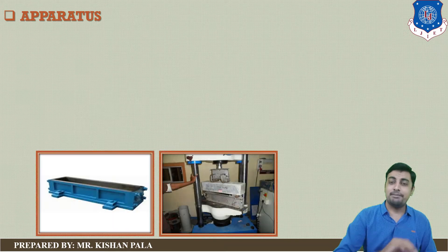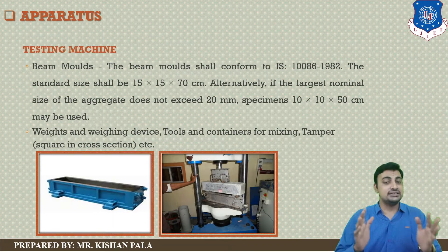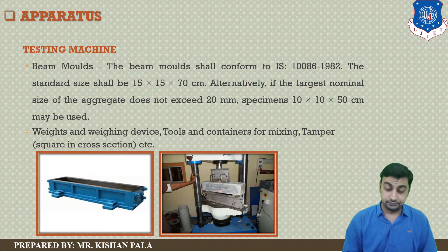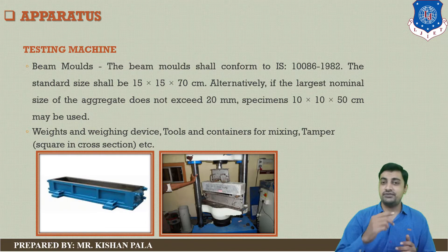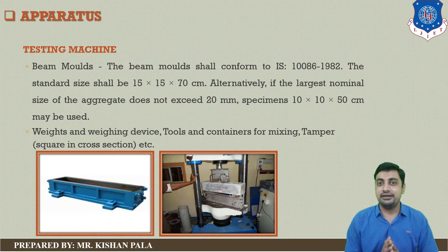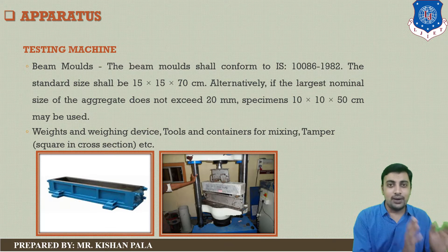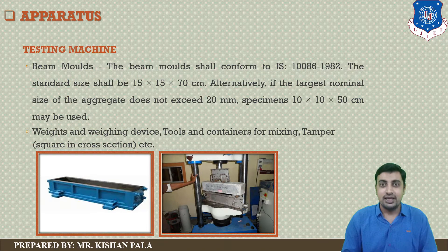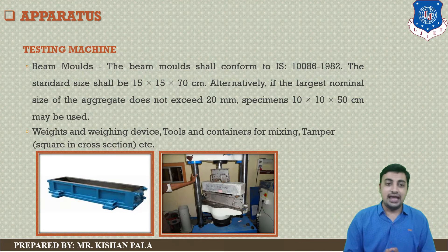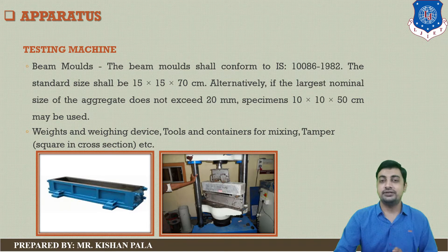For the apparatus required to find the flexural strength, we need a beam mold. There are two types of beam mold: first one is 15×15×70 cm size, and if you are using aggregate size less than 20 mm, you can use a 10×10×50 cm mold. We also require a universal testing machine for loading, a weighing machine, tools and containers for mixing, and a tamper for tampering.